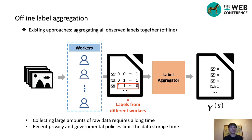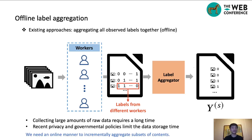First, collecting large amounts of raw data requires a long time, and it is unreasonable to wait many years to collect all the data instances. Secondly, recent privacy and governmental policies limit the data storage time, so we cannot accumulate the raw data for a long time. Therefore, we argue that we need an online manner to incrementally aggregate subsets of data.